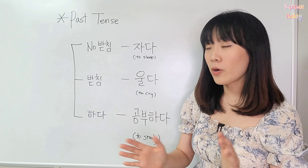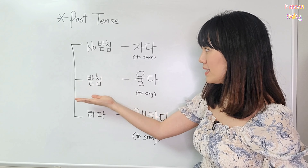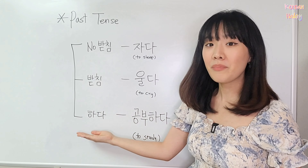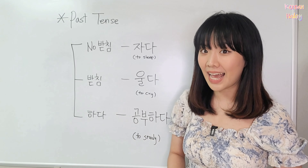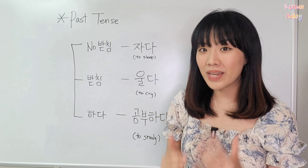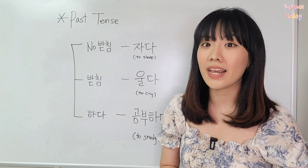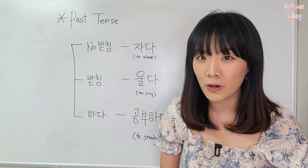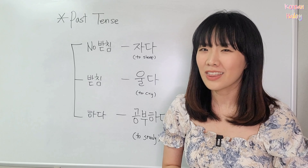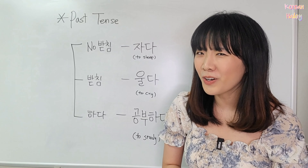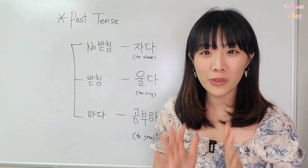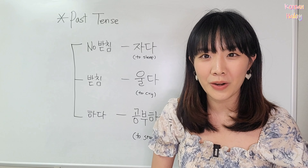I wrote 노받침, 받침, and 하다, because there are three types of verbs. Three types of verbs.